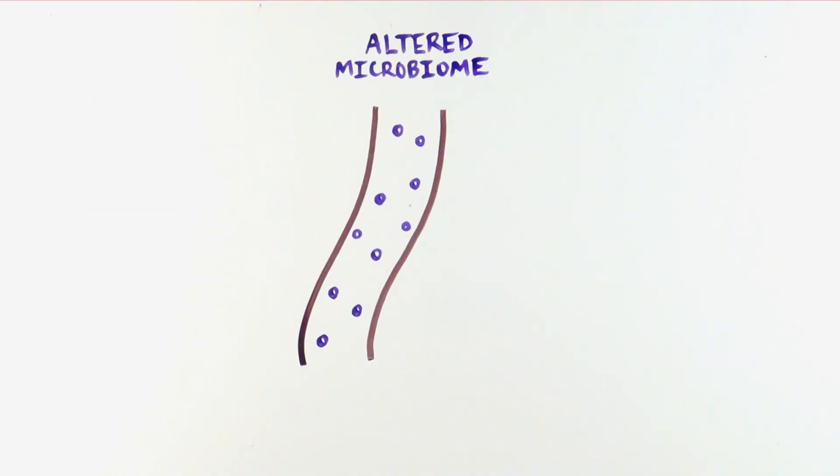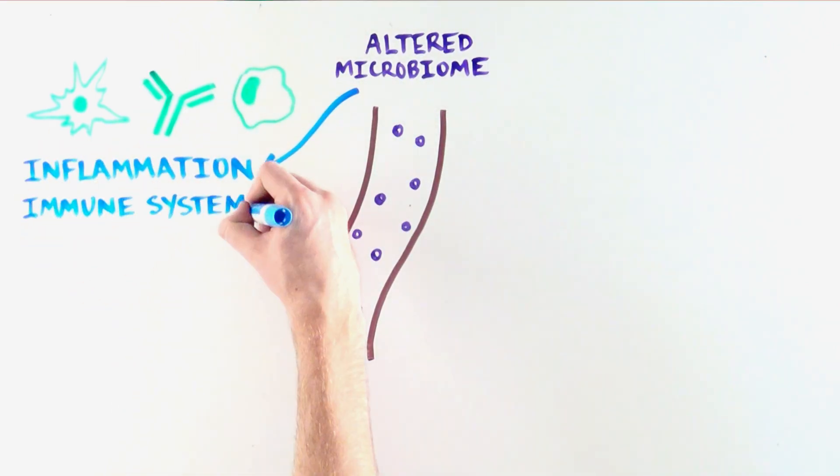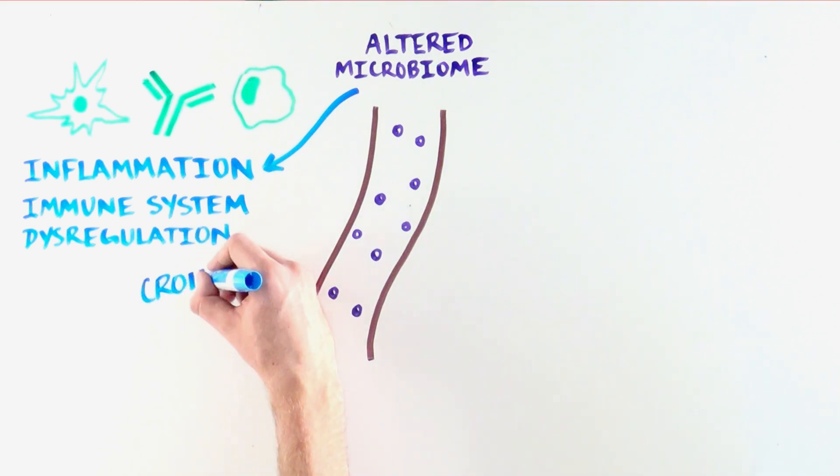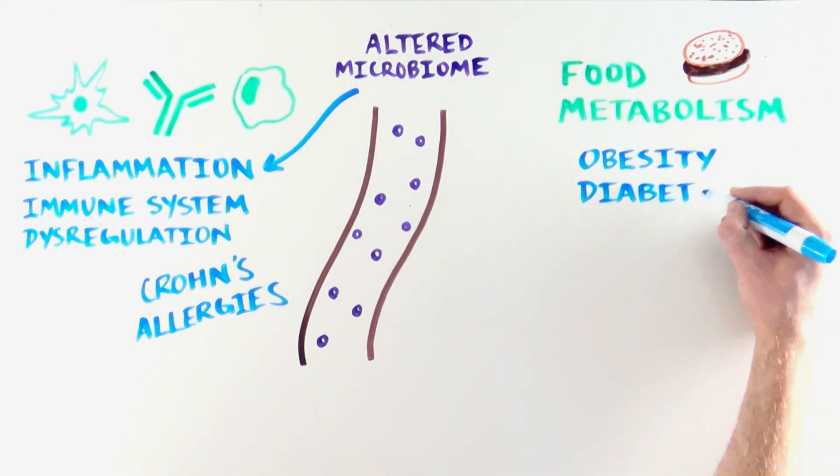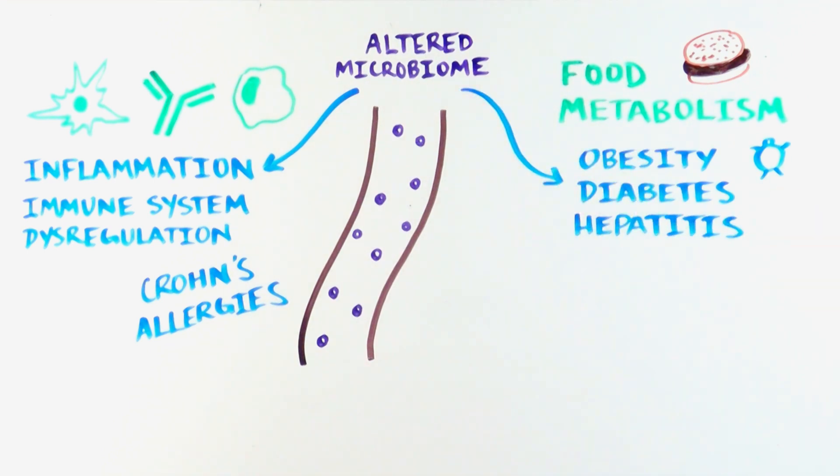Because our gut microbiome serves to regulate our immune system, alterations in its composition can promote inflammation and immune system dysregulation, such as in Crohn's disease or allergies. Changes in the gut microbiome composition could promote metabolic conditions, such as obesity, diabetes, or metabolic-induced hepatitis.